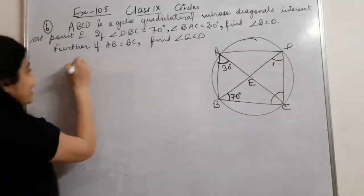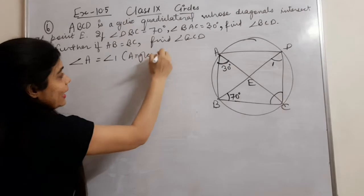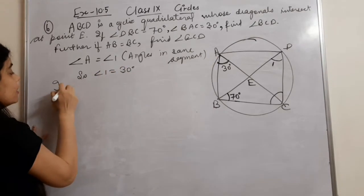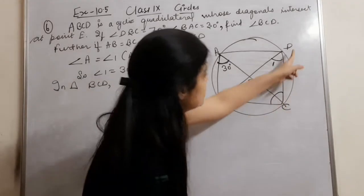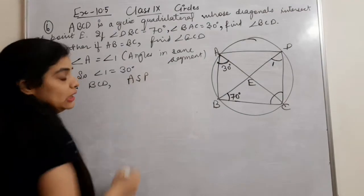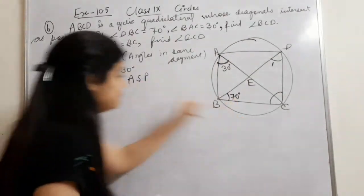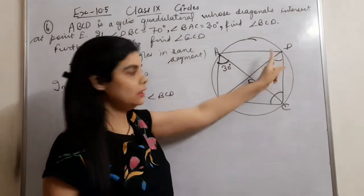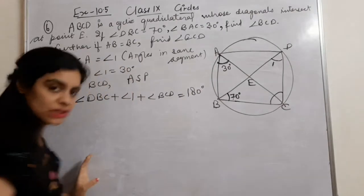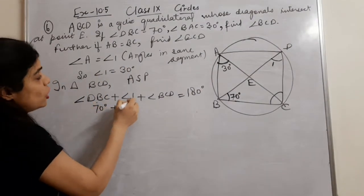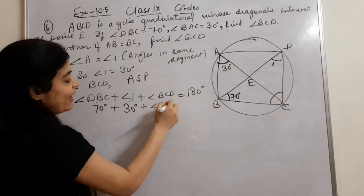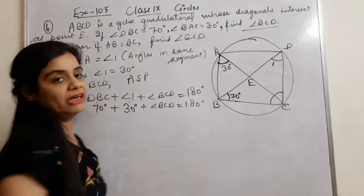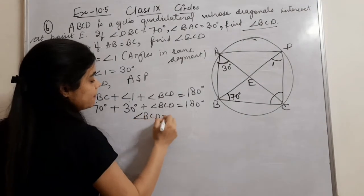I have considered angle 1. Angle A is equal to angle 1, so angle 1 equals 30 degrees. In triangle BCD, by the angle sum property: 70 degrees plus 30 degrees plus angle BCD equals 180 degrees. That gives 100, so angle BCD equals 80 degrees.